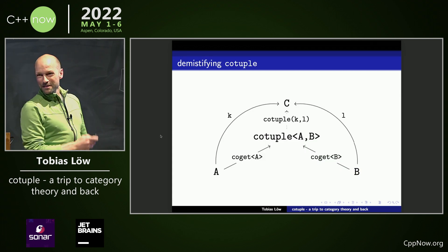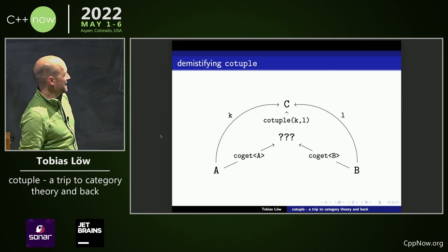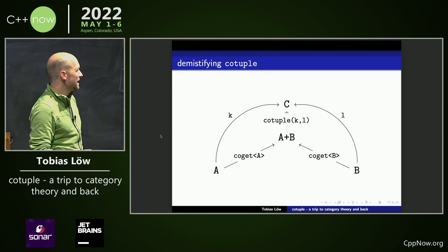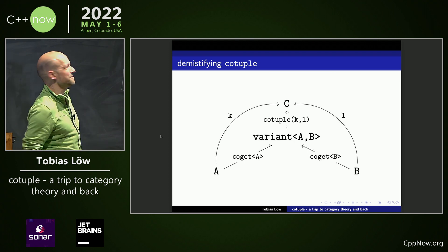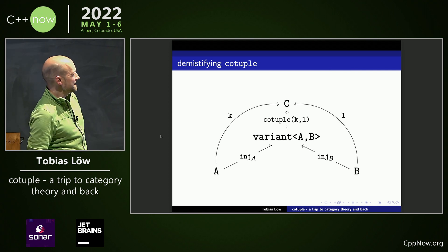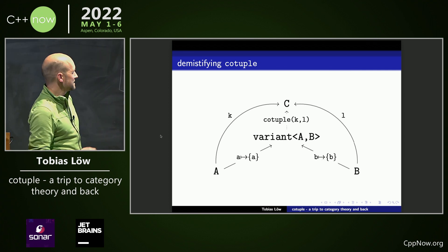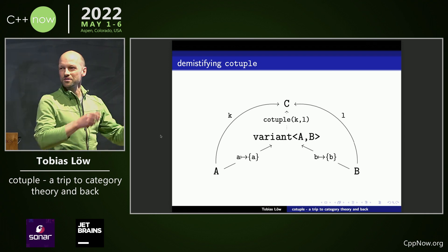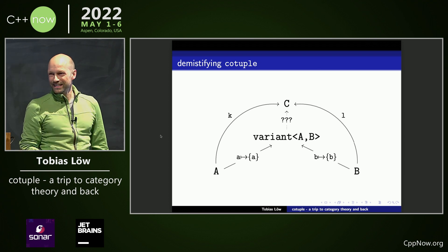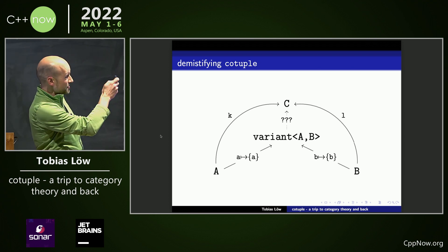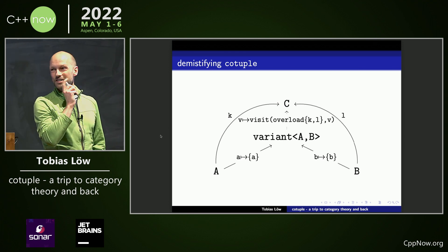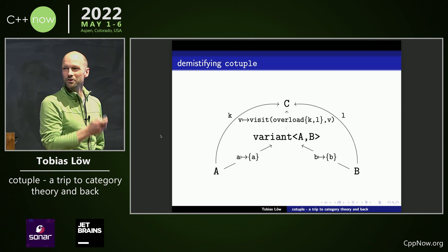Now, let's demystify co-tuple. What's this in the middle? In category theory, it's just the sum of A and B. So, let's call it sum AB. No, we call it variant A and B. Those two functions, what are those? In category theory, they're just the injections. And in our case, it's just constructing the variant from the elements. Now, what's that? The unique function here in category theory, they call it sometimes case. In our case, it's just std::visit, with the overload of K and L.